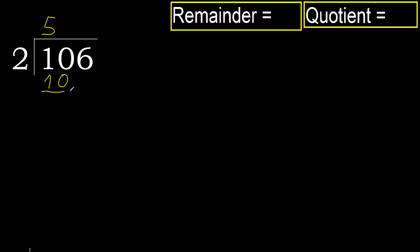10 is not greater. 10 minus 10 is 0. Next, eliminate 0 on this side. 6.